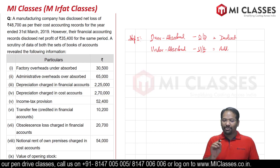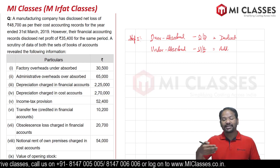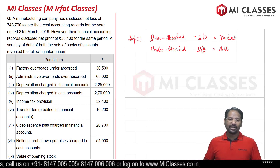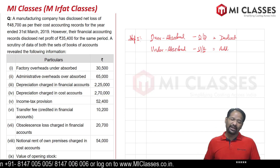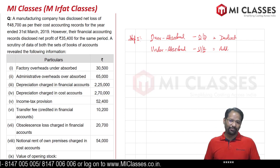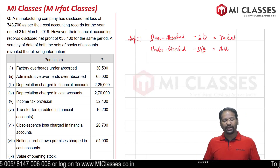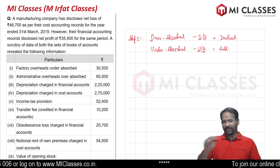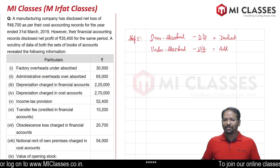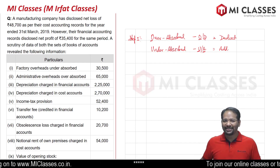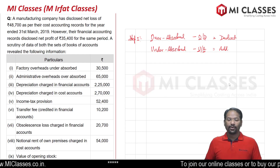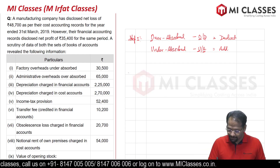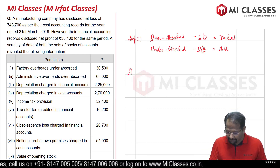Under absorbed is added when we are starting with financial accounting profit, and we will always start with financial accounting profit. If the question says to start from cost accounting, whatever we are doing we will just do the opposite — remember how BRS works? It works in exactly the same fashion.